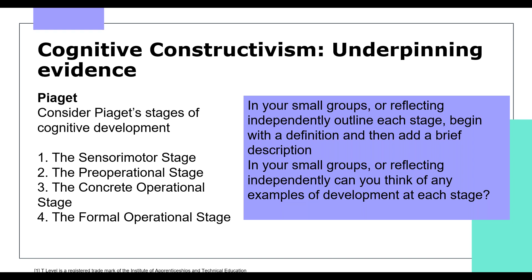Then comes the pre-operational stage. At the age of two, children enter this stage where their ability to use mental representations, rather than the physical appearance of objects or people, improves greatly. Examples include engaging in pretend play and talking about past events or people not in the room. Children also begin to understand causality and identities — for example, a caregiver dressing up as Santa Claus might not be as convincing.